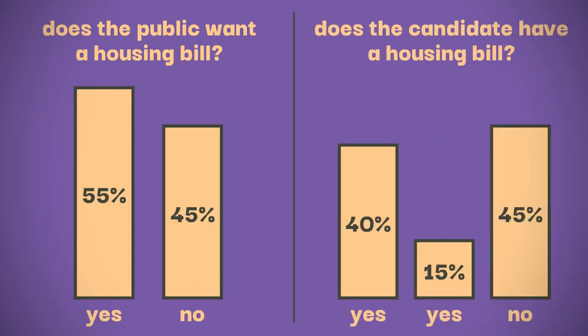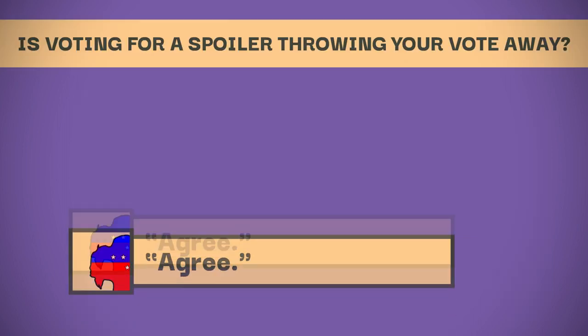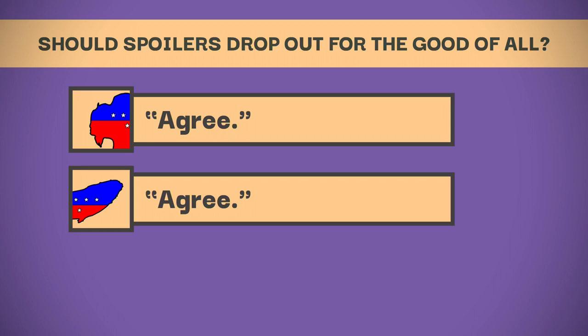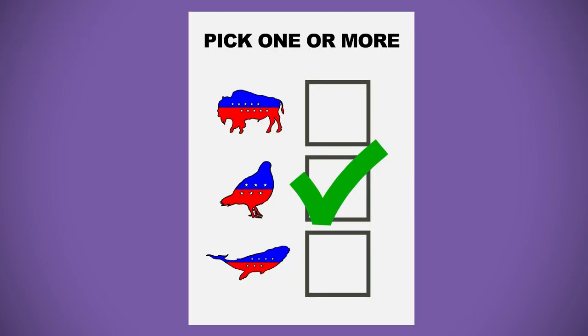And we argue back and forth, is voting for spoilers throwing your vote away? Should spoilers drop out for the good of all? But the truth is, we shouldn't have to make those decisions. There's nothing democratic about them. With approval voting, a 15%er still probably won't win, but if their supporters care enough about housing to pick a backup, it doesn't cost anything to run.